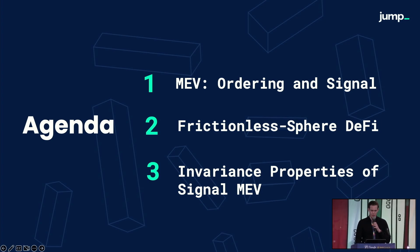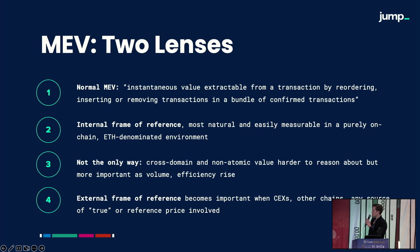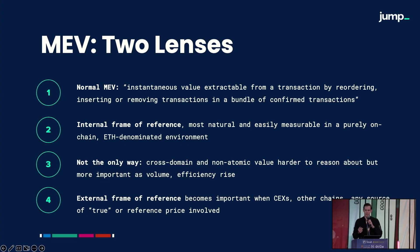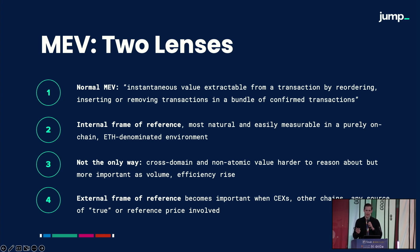And finally, we will go through the results themselves and their implications. At a high level, there are a couple of ways to think about MEV. The normal way is instantaneous value extractable from a transaction by reordering, inserting, or removing — in other words, what you can do by swapping things around, taking them in or out. That is the perfect way to think of the internal frame of reference. If you're looking at PGAs or contention within a block, it's what you'd naturally arrive at in an on-chain, ETH-denominated environment. However, it is not the only way.